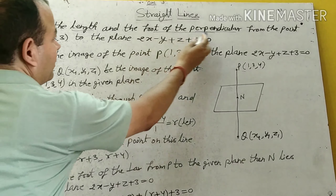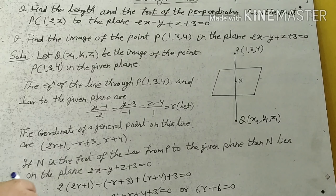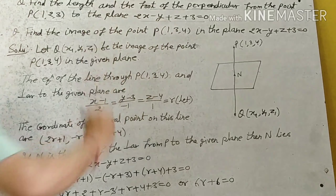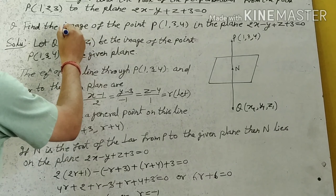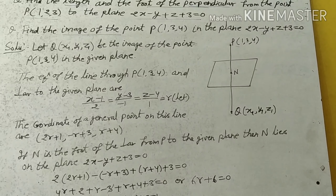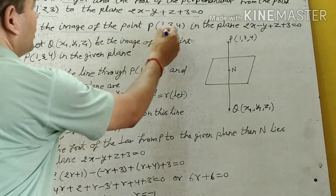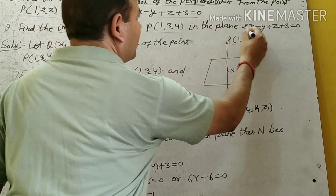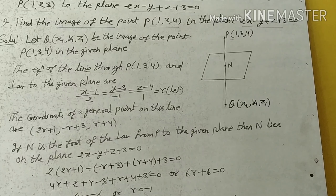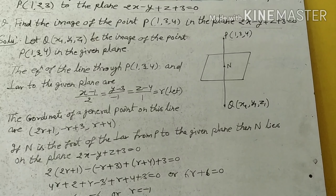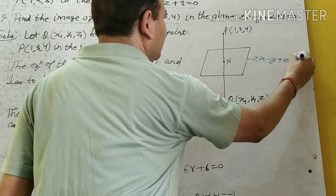Find the length and the foot of the perpendicular from the point P(1,3,4) to the plane 2x minus y plus z plus 3 equal to 0. The second question asks to find the image of the point P(1,3,4) in the same plane 2x minus y plus z plus 3 equal to 0. So the point and the equation of the plane are the same for both questions.